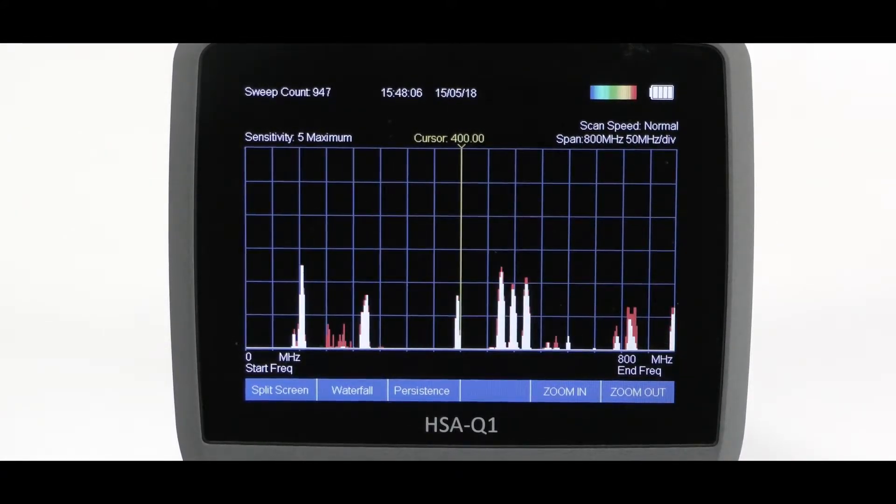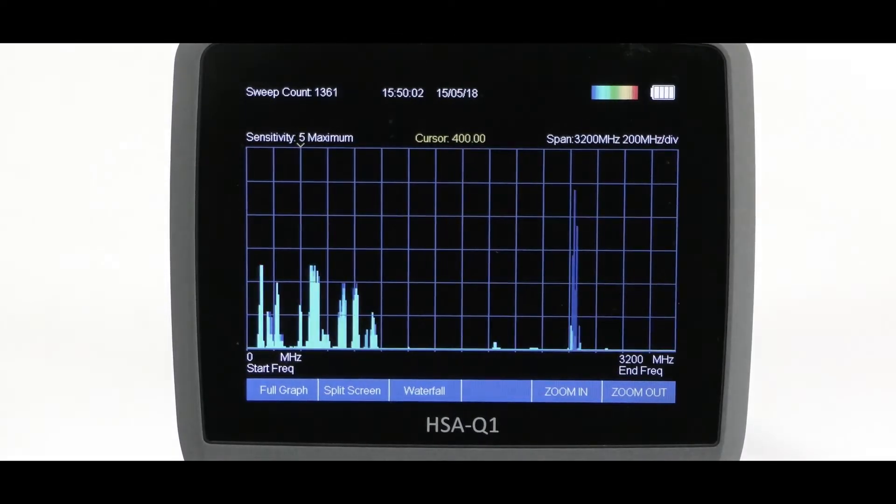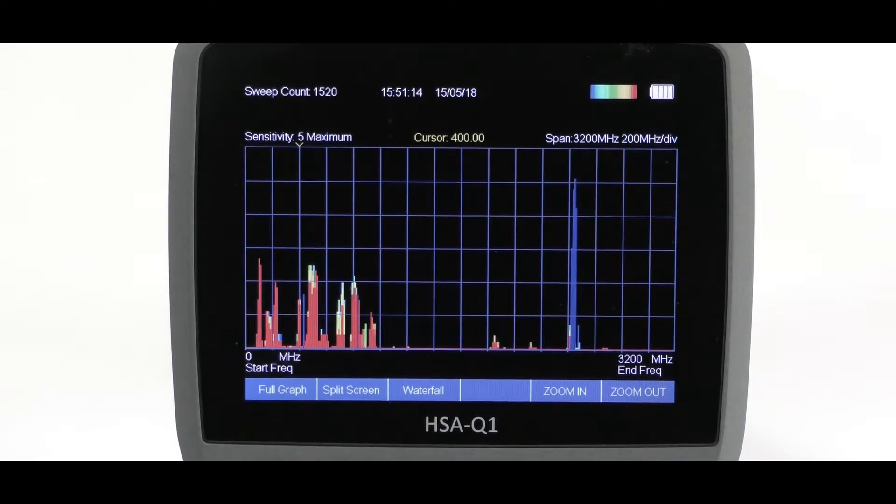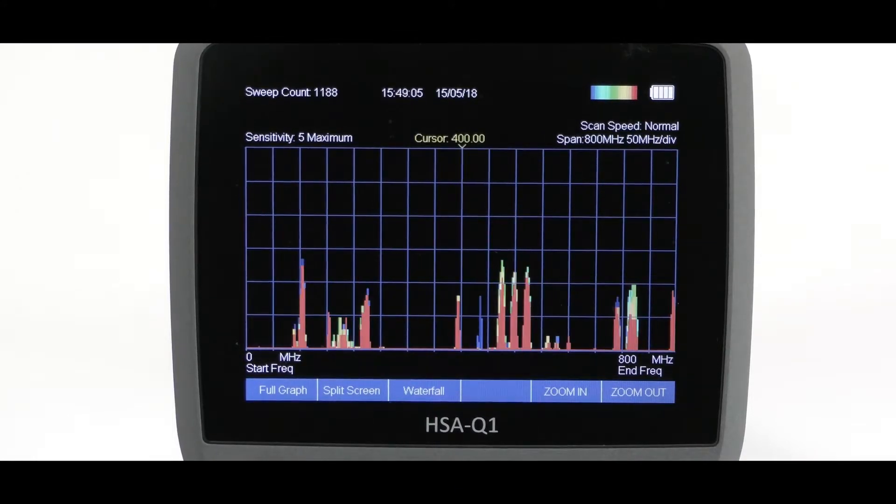The next soft key function is persistence. This gives a color gradient over time. Observe the color palette on the top right of the screen. Thus, the signals that persist the most will become red display while those which are occasional are blue and various colors in between according to the level of activity. This gives an excellent pictorial view of the RF spectrum.